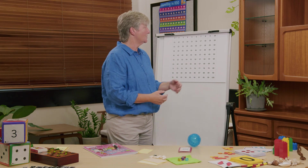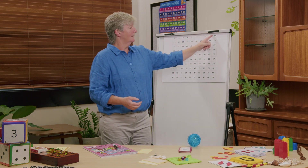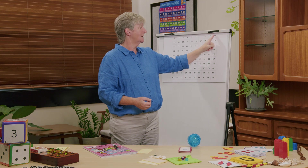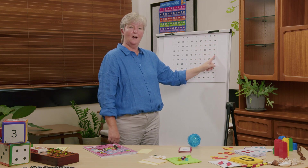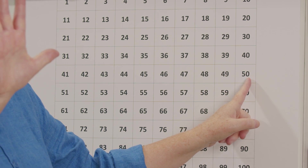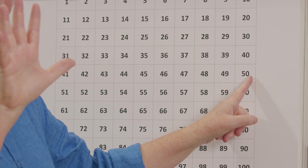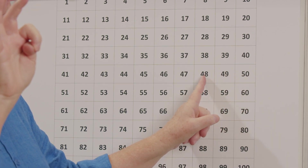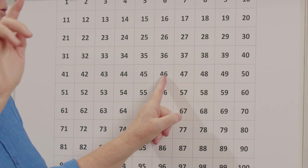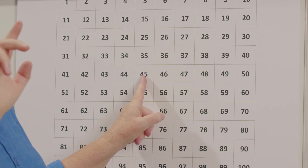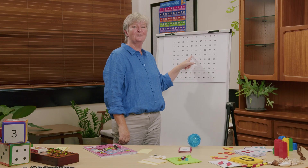Let's think of a number that is 5 less than 50. Can you find the number on the number chart that is 5 less than 50? Let's go to our number chart — all our T numbers, and 50 is right there. Now we want to go 5 less. Watch how I do it: 50, 49, 48, 47, 46, 45. Did you get 45 was 5 less than 50? Counting backwards can be a bit tricky, can't it?